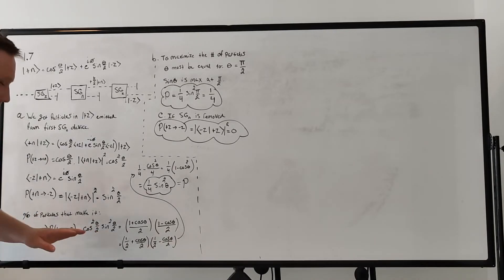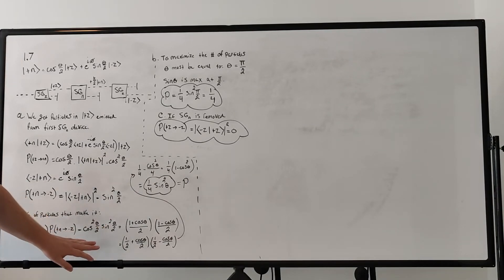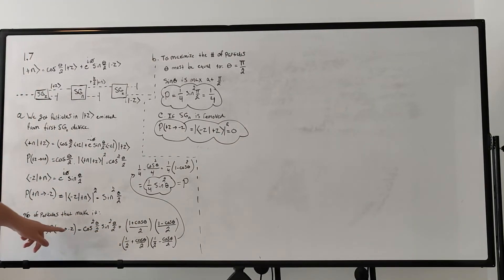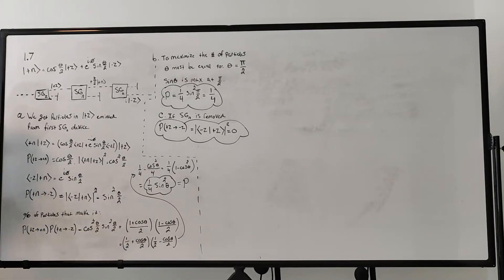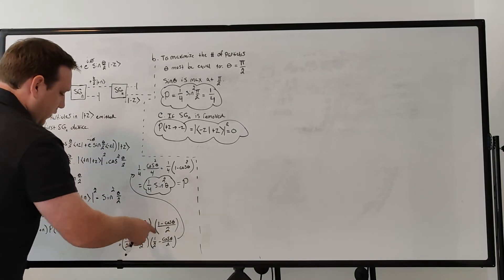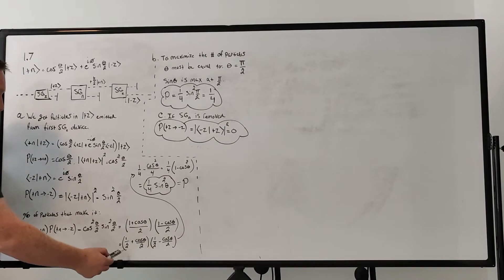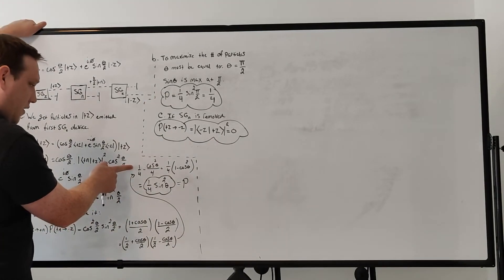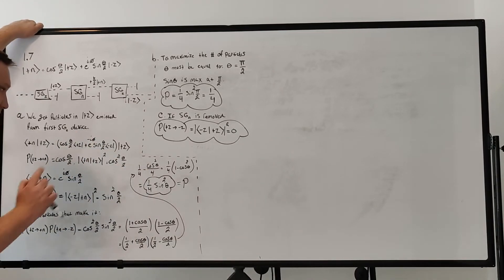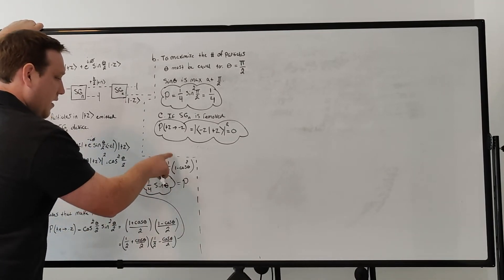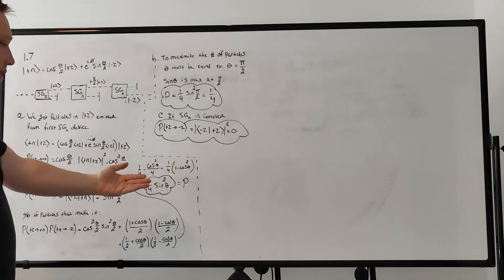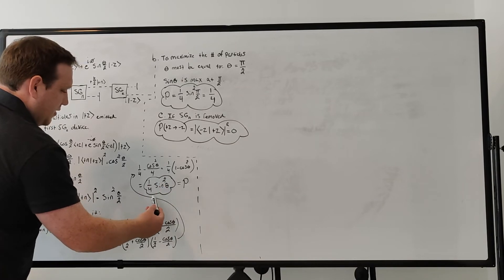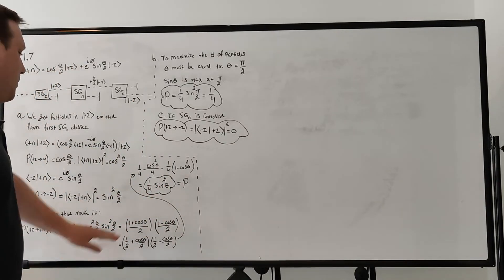To simplify, we use the half-angle formulas: cosine²(θ/2) = (1 + cosθ)/2 and sine²(θ/2) = (1 − cosθ)/2. Multiplying these together gives (1/4) − cos²θ/4. Factoring out one-fourth: (1/4)(1 − cos²θ), and since 1 − cos²θ = sin²θ, we get (1/4)sin²θ. That's a clean expression for the fraction of particles making it to the end, depending only on sinθ.